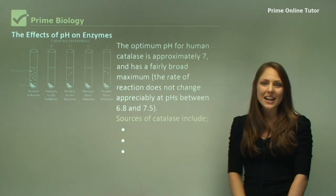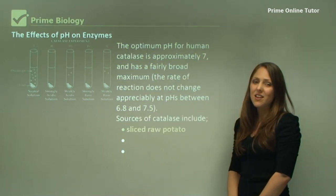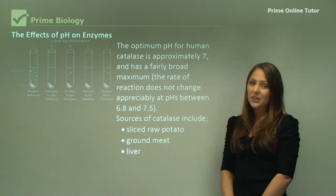Sources of catalase include raw sliced potato, ground meat, and liver.